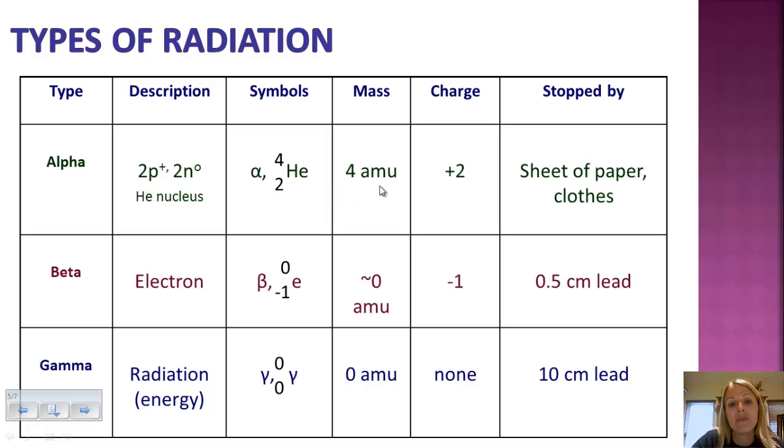The mass of an alpha particle is 4 atomic mass units. It has a positive charge. And this type of radiation can be easily blocked. Your clothes block it. A piece of paper can block it. It is easily blocked when it's outside of the body.